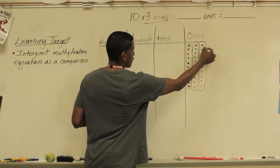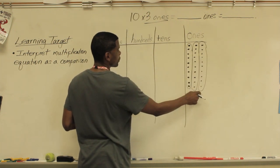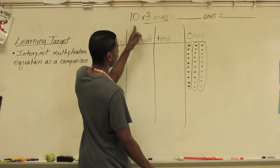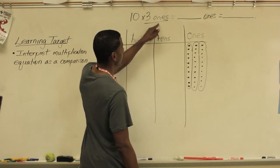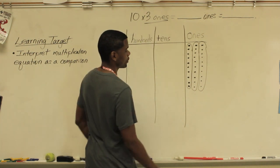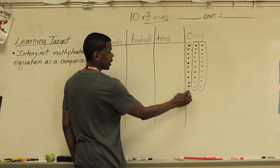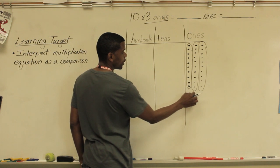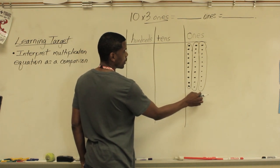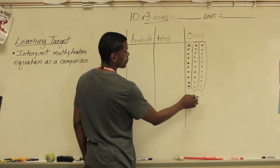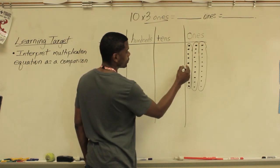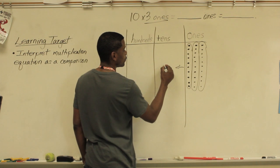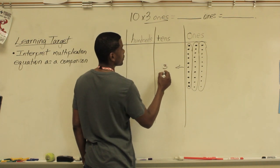And so what we have here is one, two, three sets of ones. Ten times three ones equals — and if you count this up, you have ten, twenty, thirty.